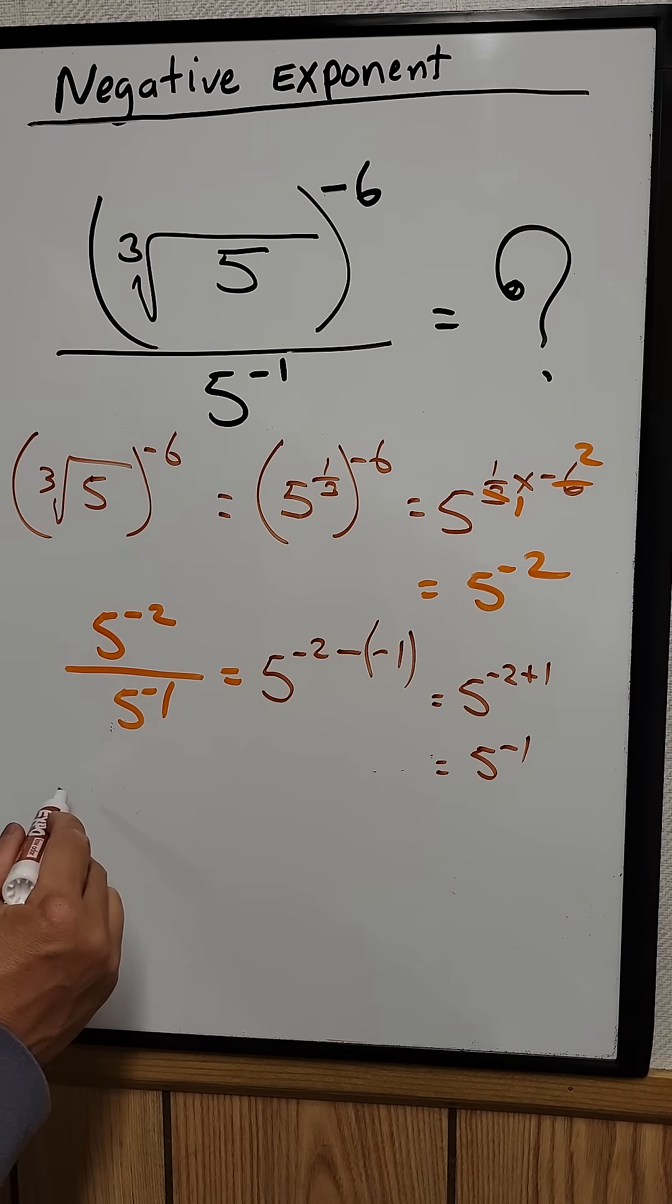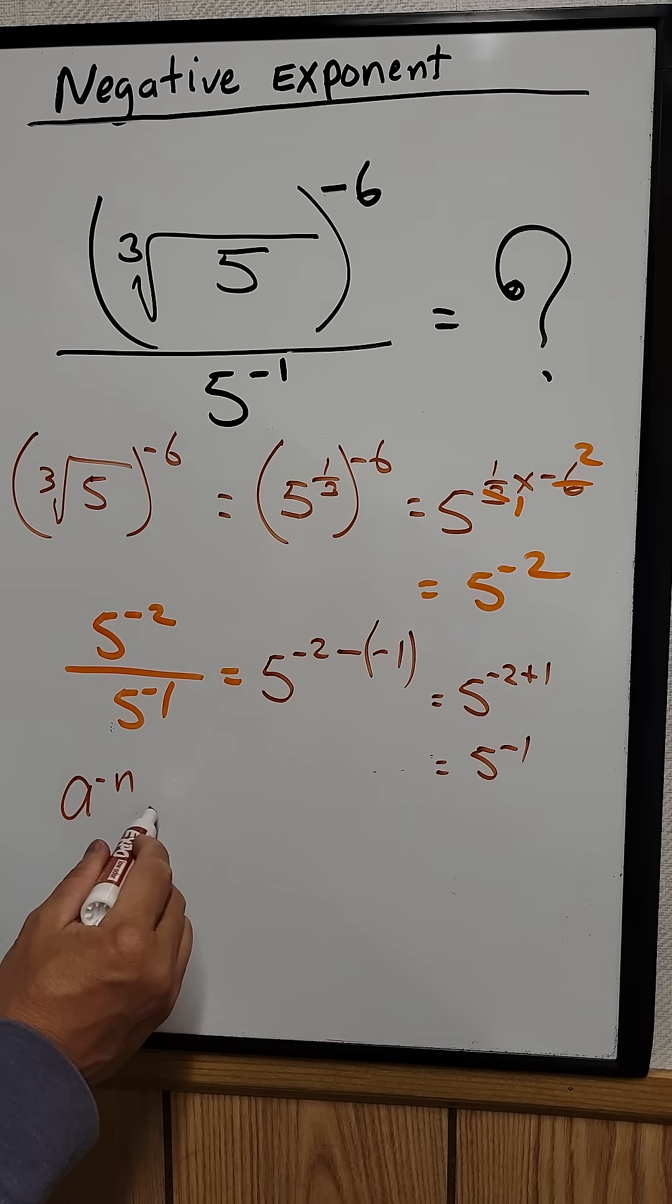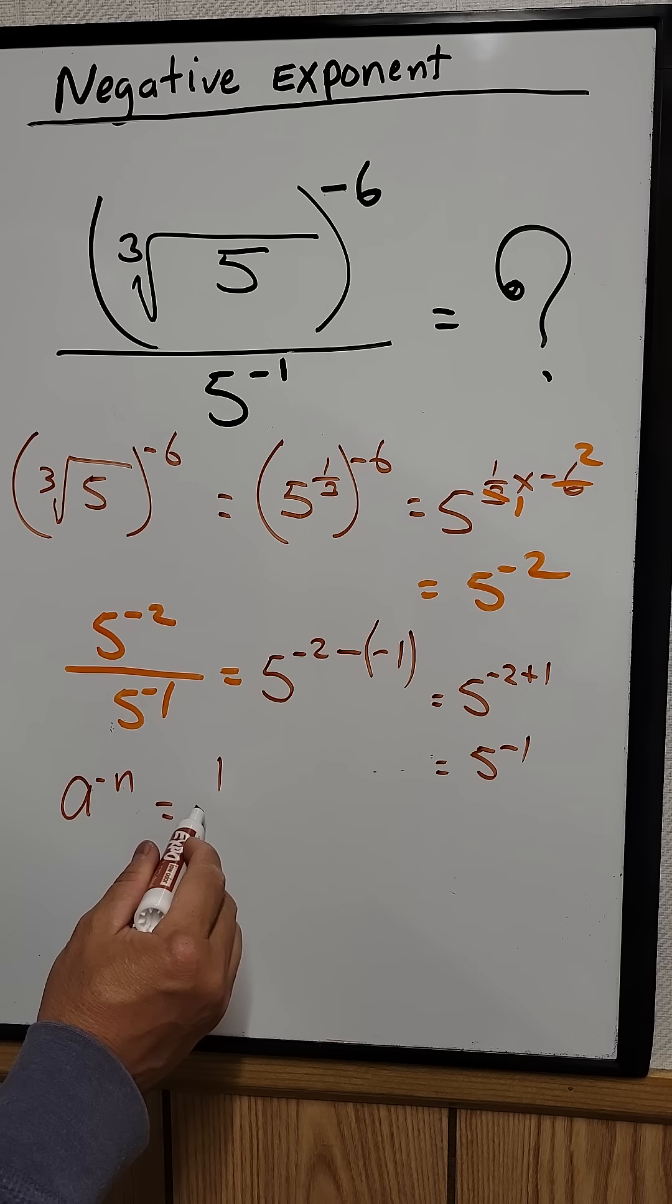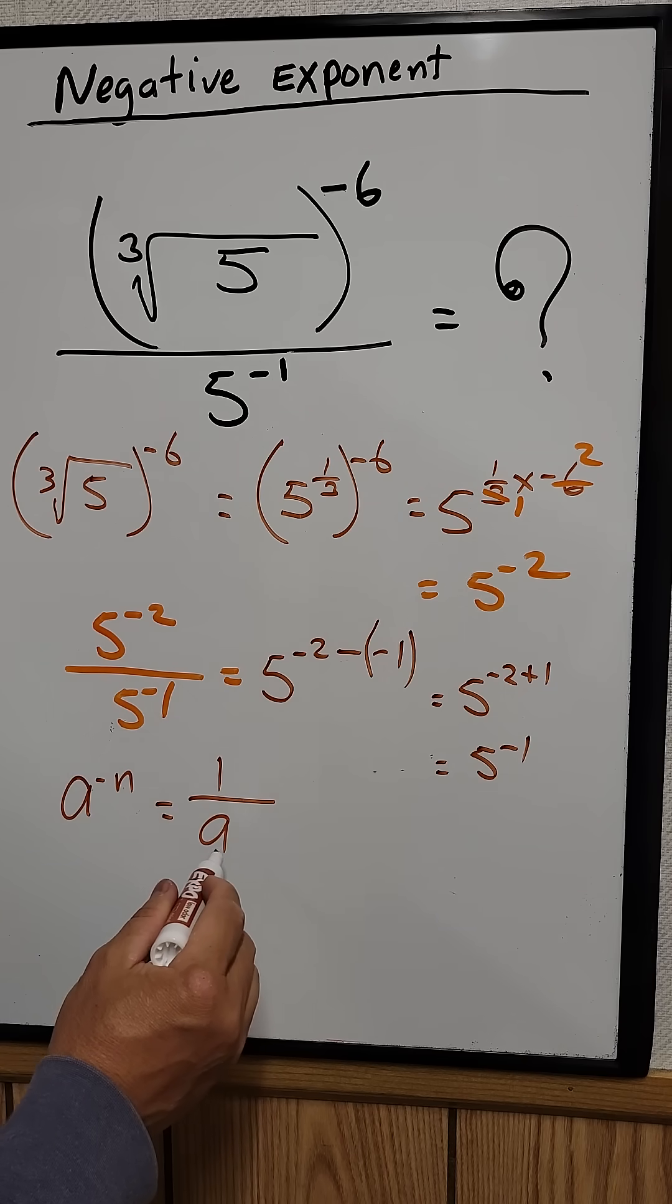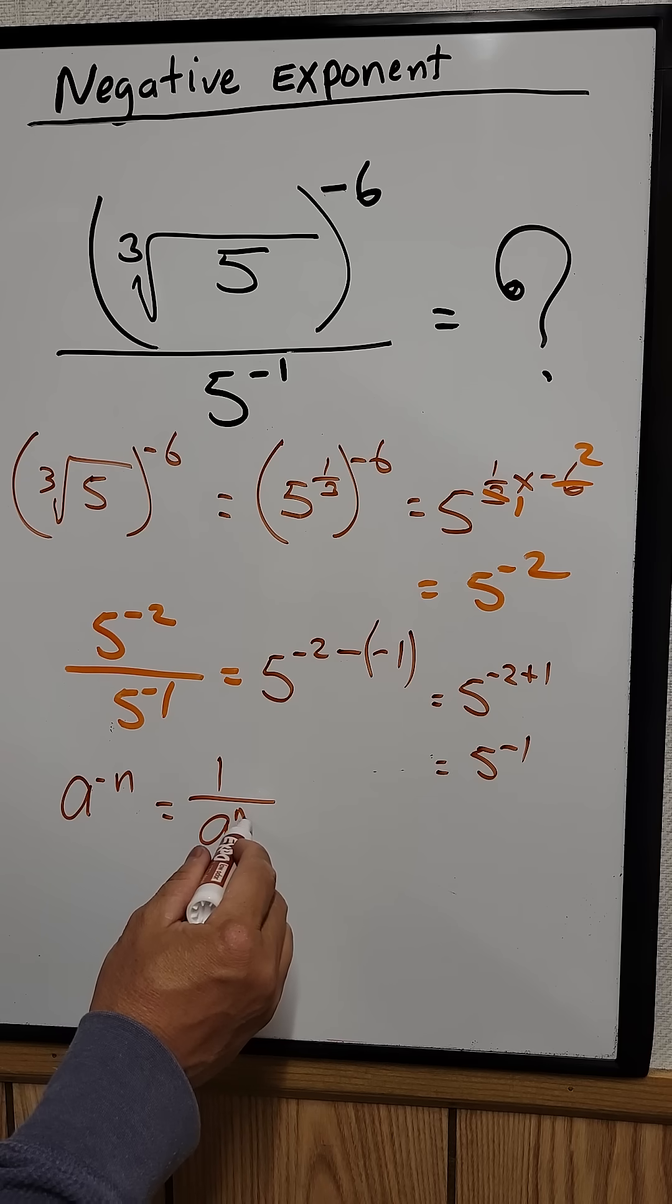So according to the law exponent, you have a negative, I mean, a raised to the negative n. You can rewrite that as 1 over a raised to the n power.